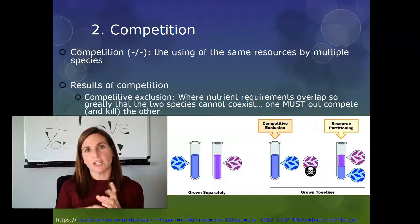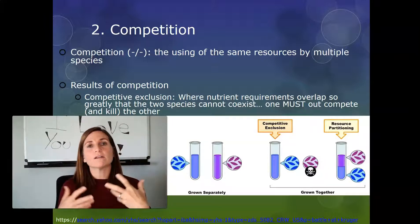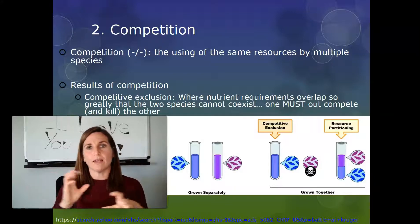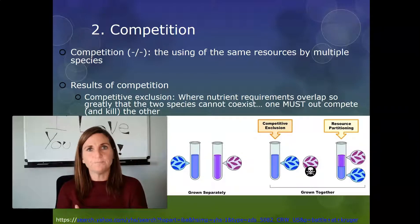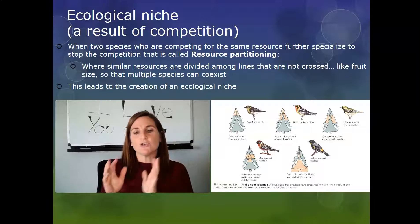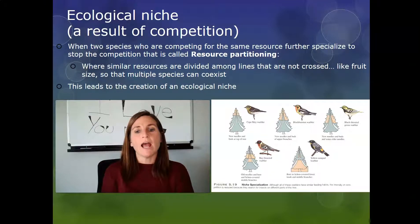The other way is called resource partitioning. In resource partitioning, two species learn to coexist by becoming more specialized. Maybe one prefers warmer or colder conditions, more sunlight or less, early morning or late at night. They change what resources they go after so that they can both continue getting what they need and both survive.